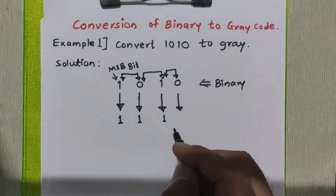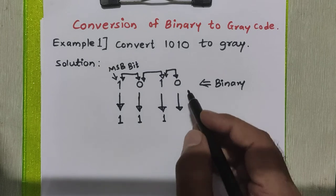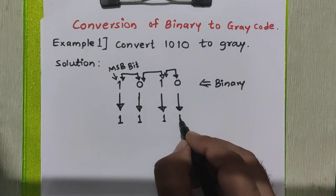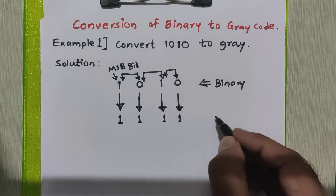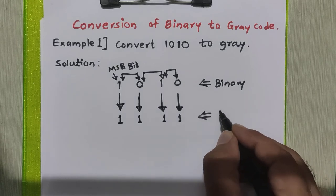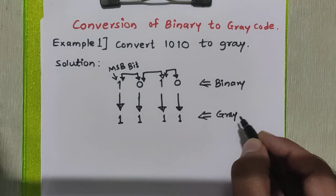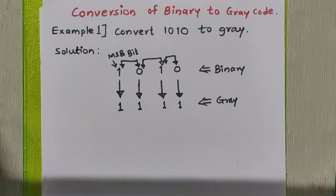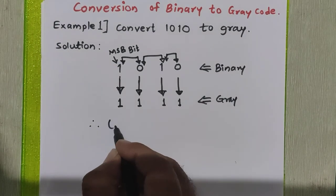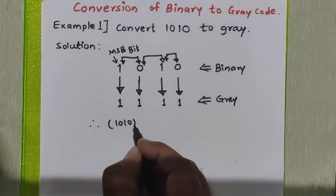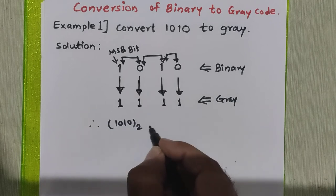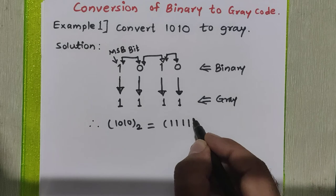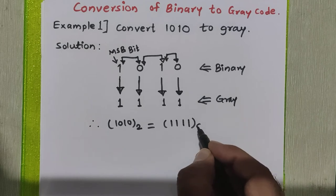If any carry is generated, we will ignore that carry. So 1 plus 0 is 1. This is the grey code for the given binary number 1010. Therefore, 1010 binary is equal to 1111 in grey.